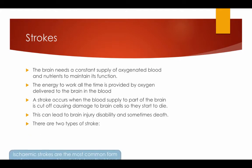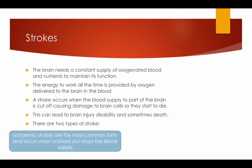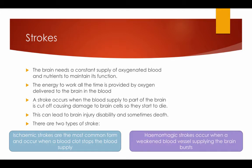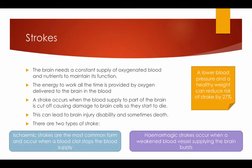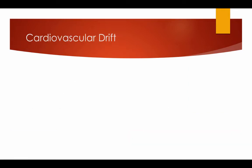There are two types of stroke. Ischemic strokes are most commonly found and occur when a blood clot stops the blood supply. Hemorrhagic strokes occur when a weakened blood vessel supplying the brain bursts. A lower blood pressure and a healthy weight can reduce the risk of stroke by up to 27%.